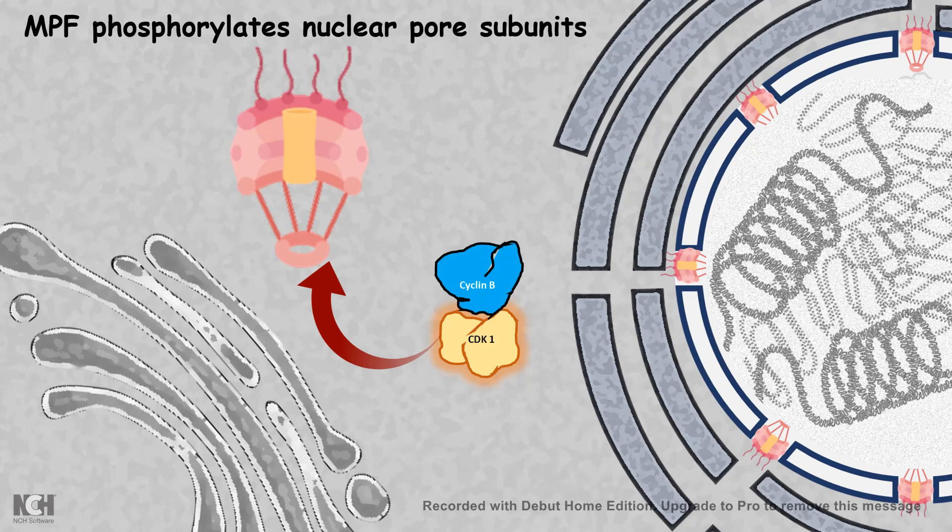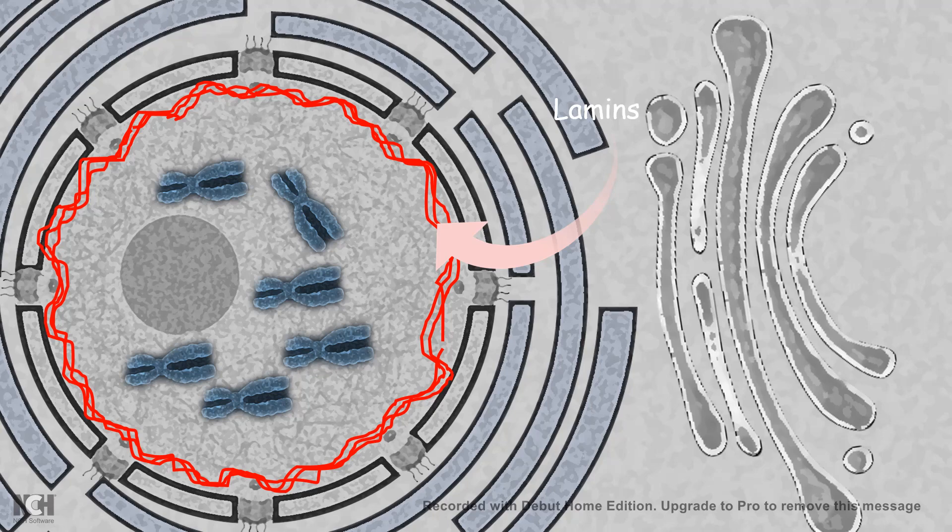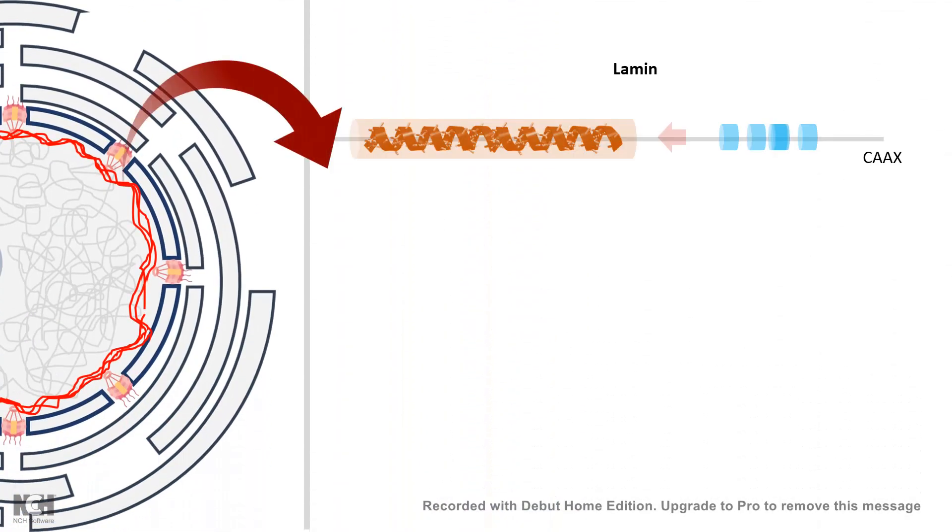Now we know, this maturation-promoting factor is so important in the onset of prophase. In the onset of prophase, maturation-promoting factor phosphorylates nuclear pore subunits, which leads to their dissociation. Not only that, lamins, which are actually support to the nuclear envelope, is actually phosphorylated.